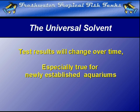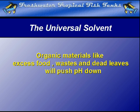Organic materials, such as driftwood, dead plants, excess food, and other wastes, are quite often active in creating changes in the characteristics the fish find themselves swimming in. Organic materials such as these, including peat, will tend to add organic compounds that drive the pH down and acidify and soften the water.